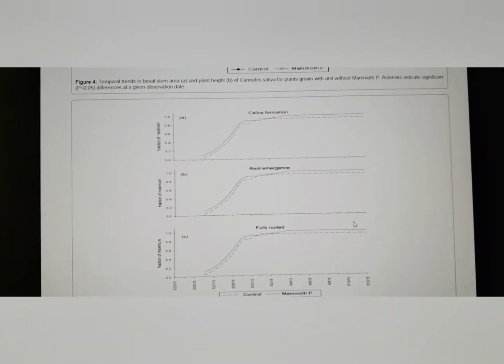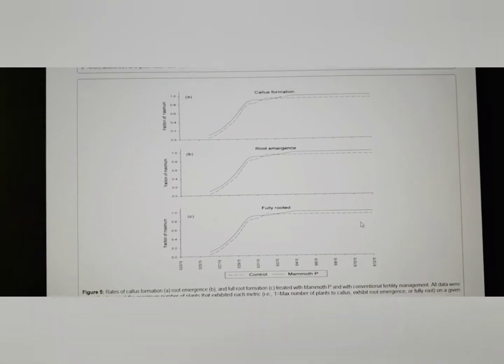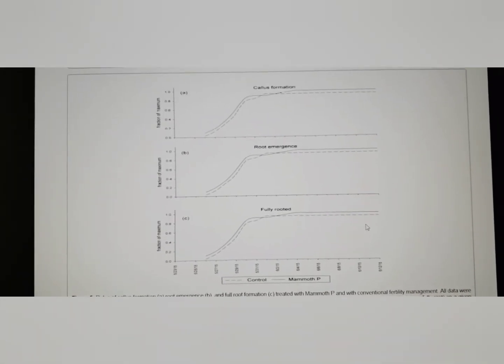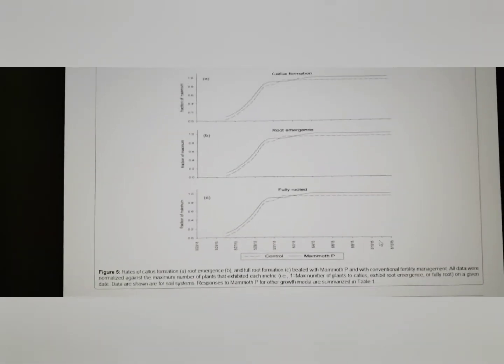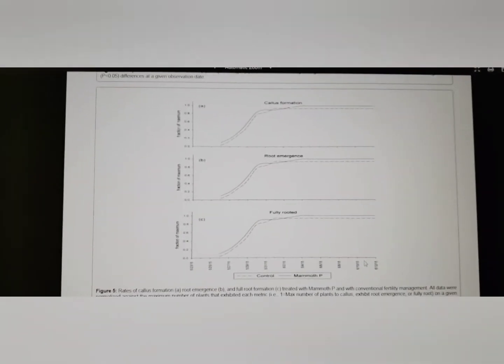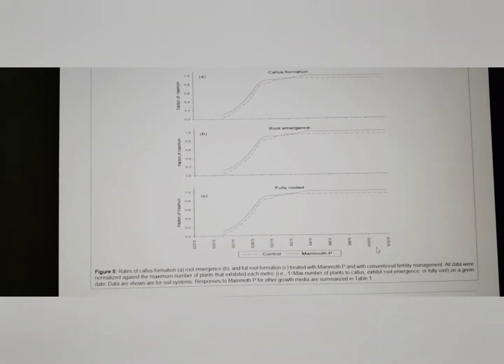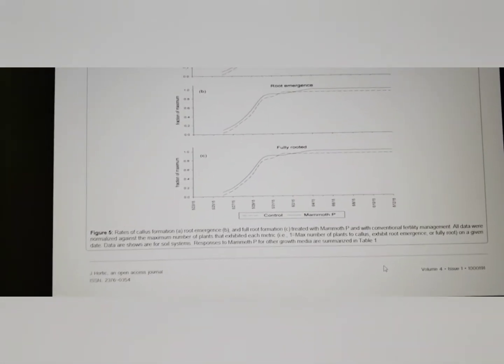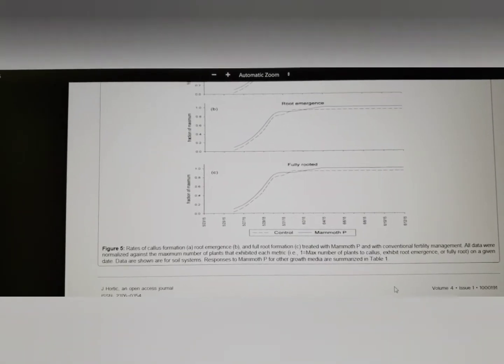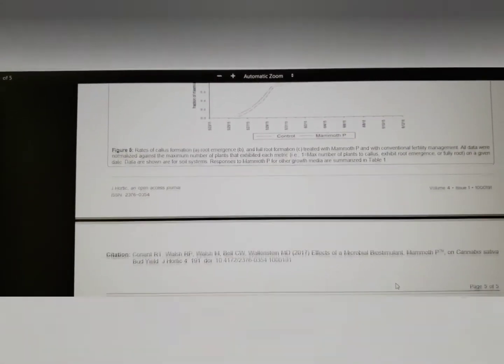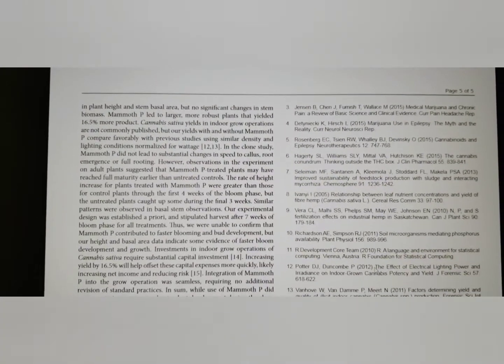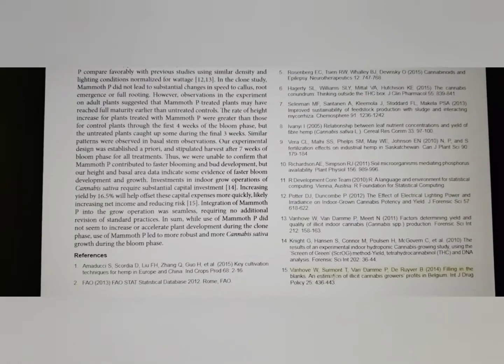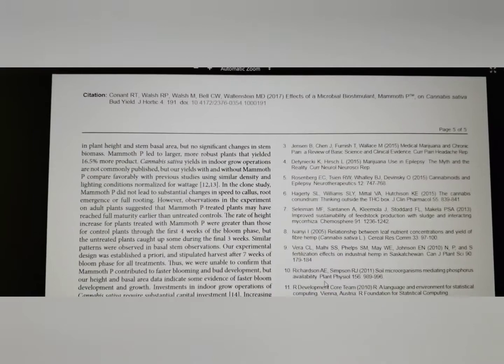I mean, this is not even like one stat leaves you questioning whether it worked and another stat is pretty definitive. All stats listed in this study are quite definitive that mammoth P soil microbes really helped these plants grow considerably higher than the plants that were untreated. And then we're at the bottom here. This is just the references and the summary.